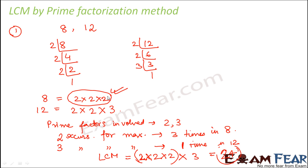So here 2 occurred more number of times than 8. How many times? 3 times. So we picked up 3 times 2 from 8 and we picked up 1 times 3 because 3 occurred maximum number of times 1, 1 time in 12. And 3 did not occur at all at 8. So therefore the LCM became 2 into 2 into 2 into 3.